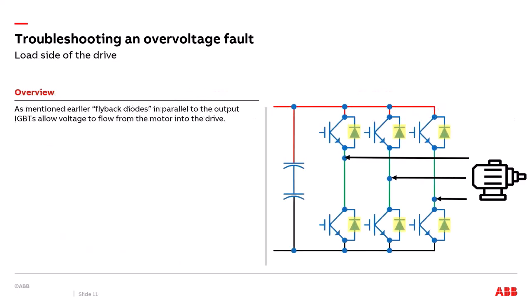We've discussed how the DC bus voltage can rise from line-side events. Now we'll transition to how the DC bus voltage can rise from an event on the output side or motor side of the VFD. Highlighted again in yellow are the flyback diodes in parallel to each IGBT, which allow voltage to come back from the motor into the VFD and onto the DC bus.